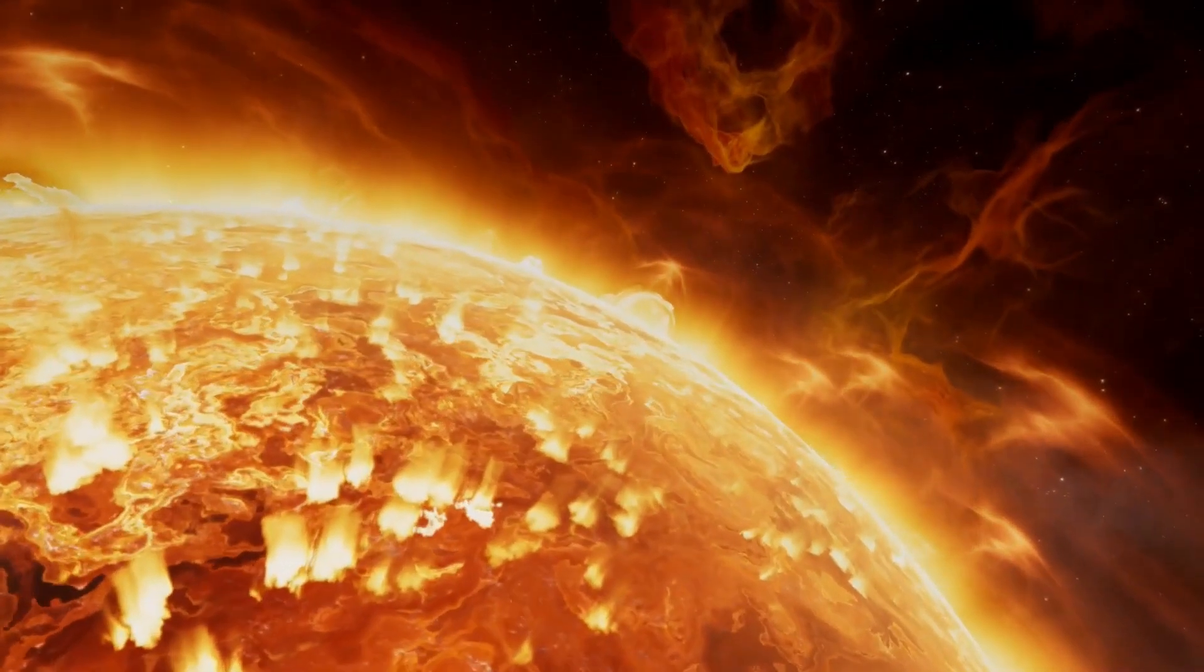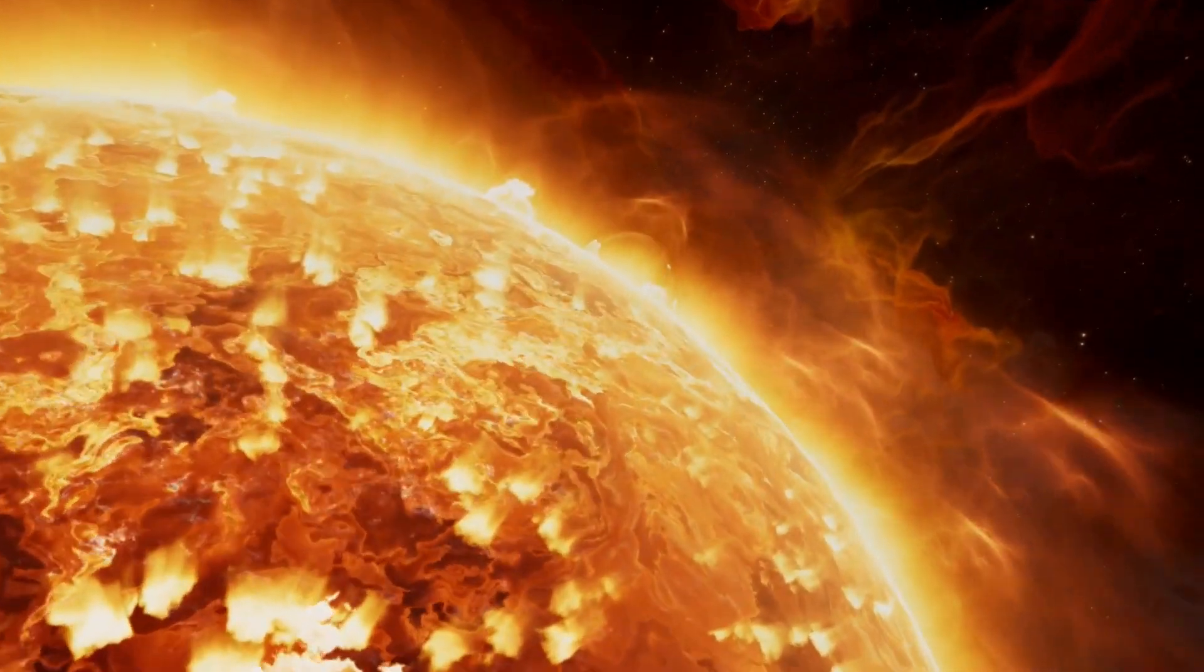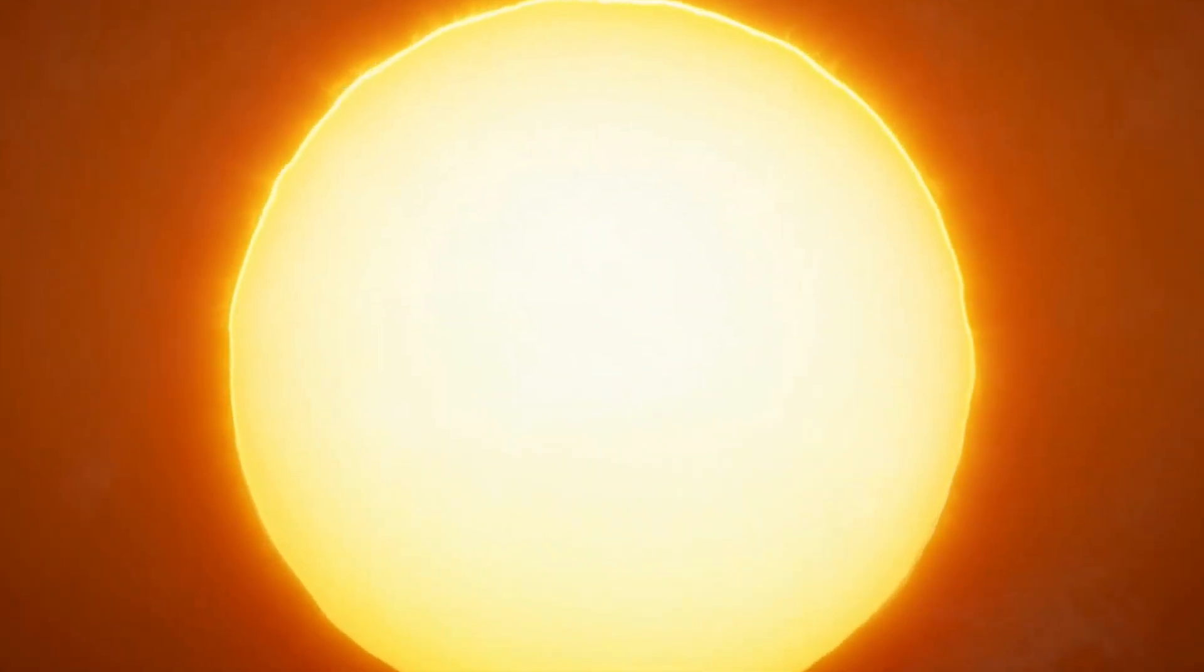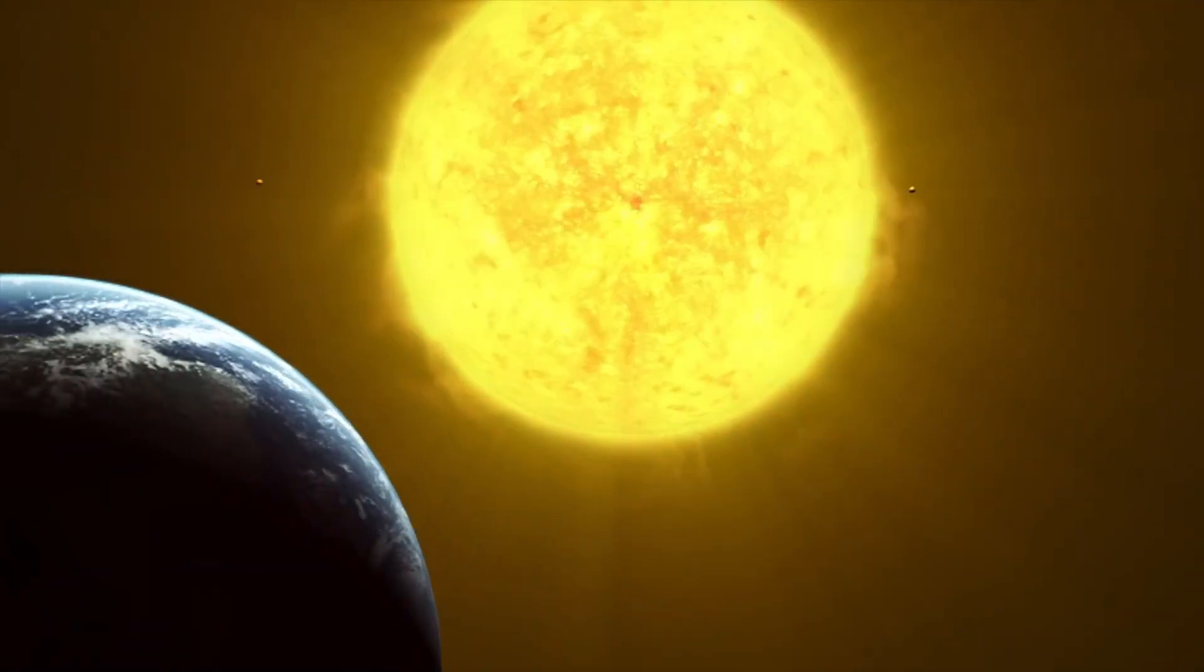Our sun is going to go through the same stage in a few billion years. And when it turns into a red supergiant, it's going to get so massive that it will eat up Earth's orbit in the solar system.